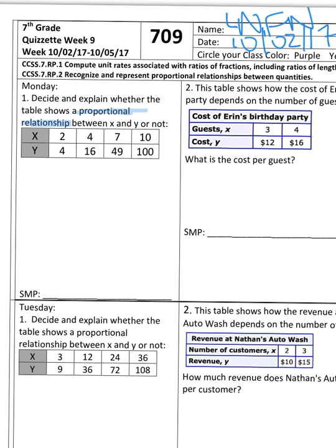And the question is asking you to do two things. The question is asking you to decide and explain whether the table shows a proportional relationship between X and Y or not.